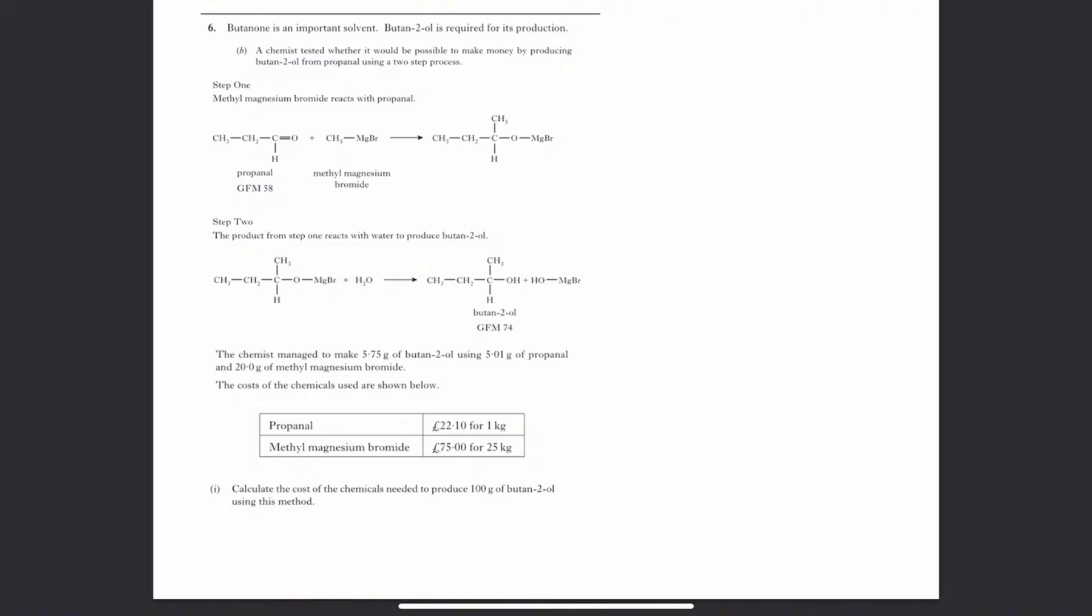So this one here is a bit of a trickier one and there's a lot of information that we're given. Butanone is an important solvent. Butan-2-ol is required for its production. A chemist tested whether it would be possible to make money by producing butan-2-ol from propanol using a two-step process. The chemist managed to make 5.75 grams of butan-2-ol using 5.01 grams of propanol and 20.0 grams of methyl magnesium bromide. Calculate the cost of chemicals needed to produce 100 grams of butan-2-ol. So we know how much reactants they needed to make 5.75 grams but we're trying to make 100.